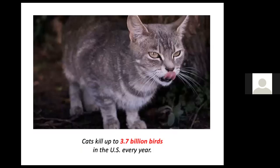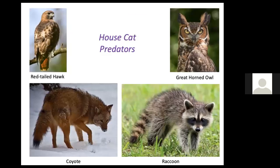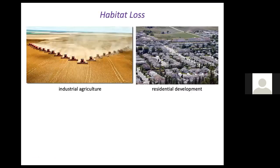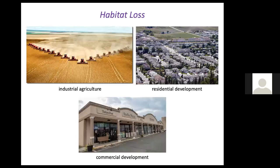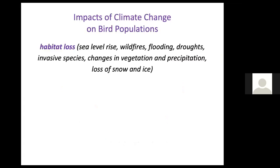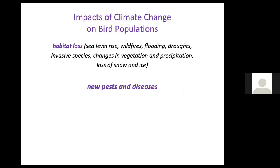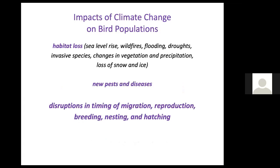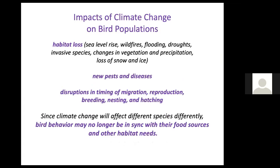Cats kill up to 3.7 billion birds in the US every year — both feral and house cats — so it's really important to keep cats indoors, also for their own well-being. Habitat loss due to agriculture and residential and commercial development has had a huge impact on all wildlife including birds. Climate change is a significant factor as well, causing additional habitat loss, new pests and diseases, and disruptions in timing of migration, reproduction, breeding, nesting, and hatching, so bird behavior may no longer be in sync with food sources and habitat needs.